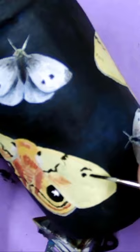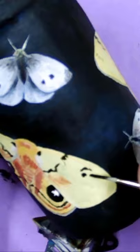I painted the whole thing black, and then I used acrylic paint to draw on some moths and other flowery things.